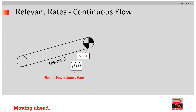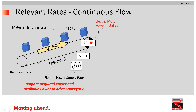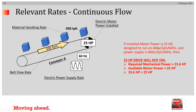Let's look at conveyor A more carefully. Suppose a power supply of 460 volt three-phase 60 hertz is readily available and we select that as our design case. We've chosen to move the belt at 330 feet per minute to handle 450 tons per hour, and we've installed a 25 horsepower motor. If we compare required and available power: required mechanical power is 23.6 horsepower, calculated separately, and available motor power is 25 horsepower. Since 25 is higher than 23.6, this drive should run continuously and indefinitely.